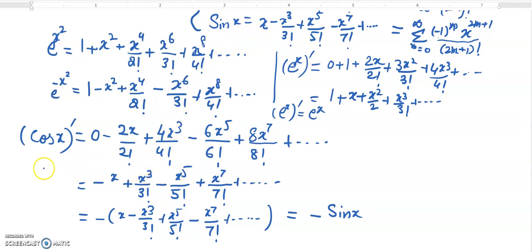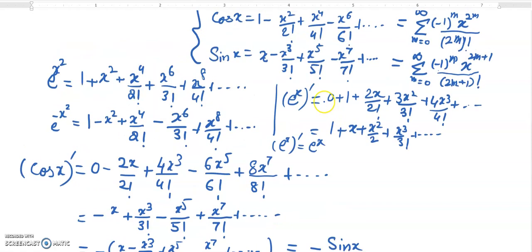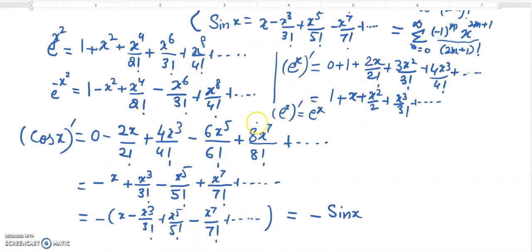We know that the derivative of cos(x) is minus sin(x), so this confirms that the power series holds for the derivative. Similarly, we can also verify this for the derivative of sin(x) — it will turn into cos(x).